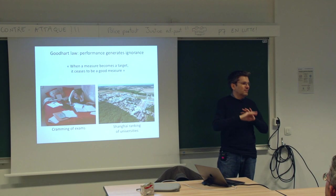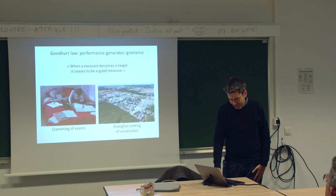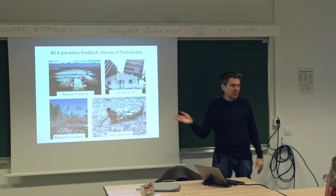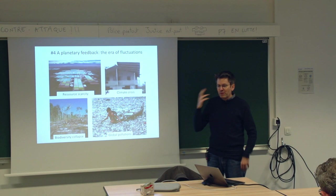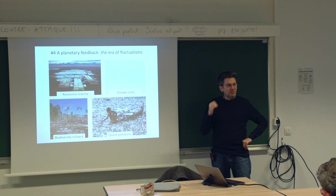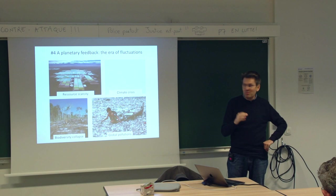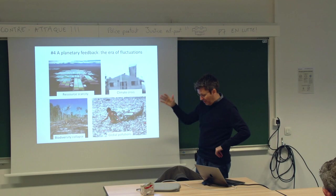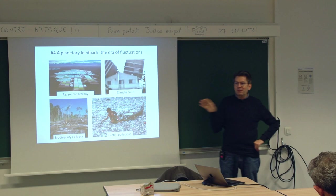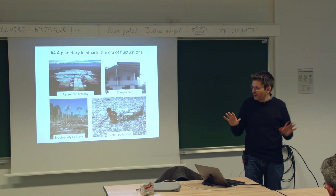The fourth argument against performance is the one you're probably most aware of: the socio-ecological crisis. When we think about it, the performance of humans has a cost. Who is paying the cost of our performance? Ecosystems. The four subjects are resource scarcity, climate crisis, biodiversity collapse, and global pollutions. I just want to insist on one word: fluctuation.